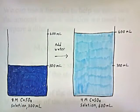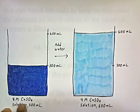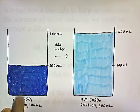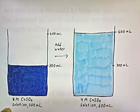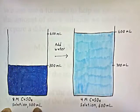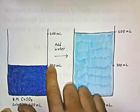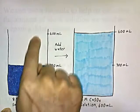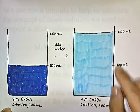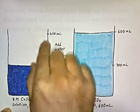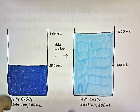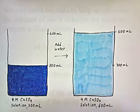So here's a picture of what I'm describing. I have an 8 molar copper sulfate solution and I want a 4 molar solution — I don't want it to be this concentrated. So what I do is add water until the volume doubles. We have 300 milliliters of solution, and I add water until the volume is 600 milliliters. By increasing the amount of water, I've diluted the concentration down from 8 to 4. So by adding water until the volume has doubled, I reduce the concentration by half.